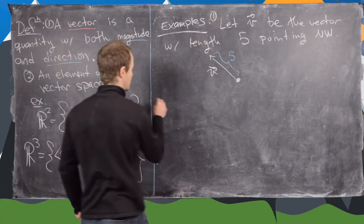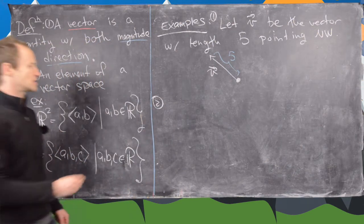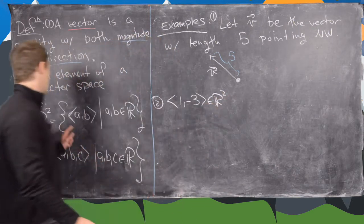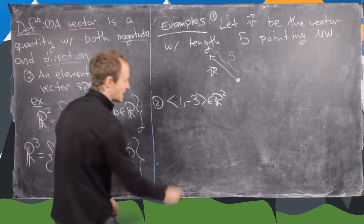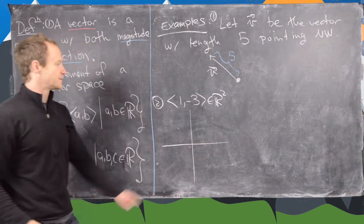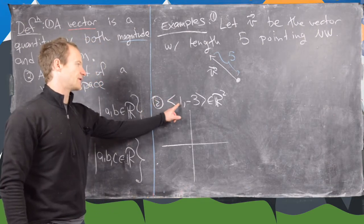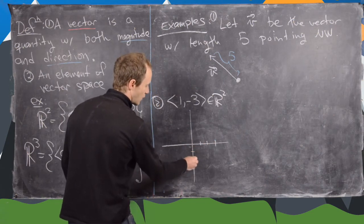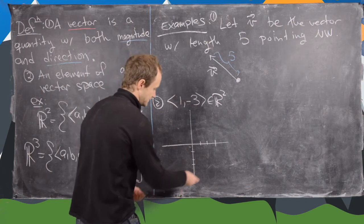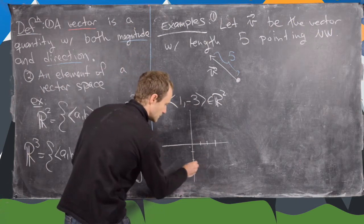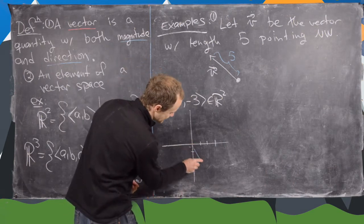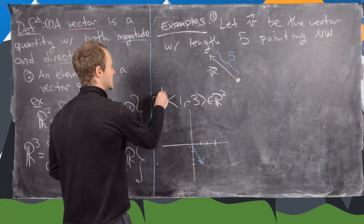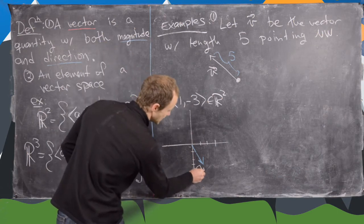A second example would be as an element of R2. Let's take ⟨1, -3⟩, which is an element of R2. We can think of that as a vector: the x-component is 1 and the y-component is -3. So we go to x = 1 and y = -3, and where those intersect gives us our vector. If we call this vector U, then U is that vector right there.